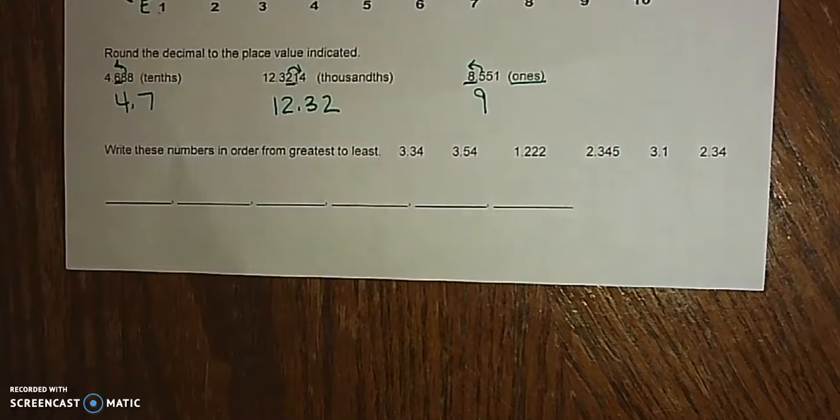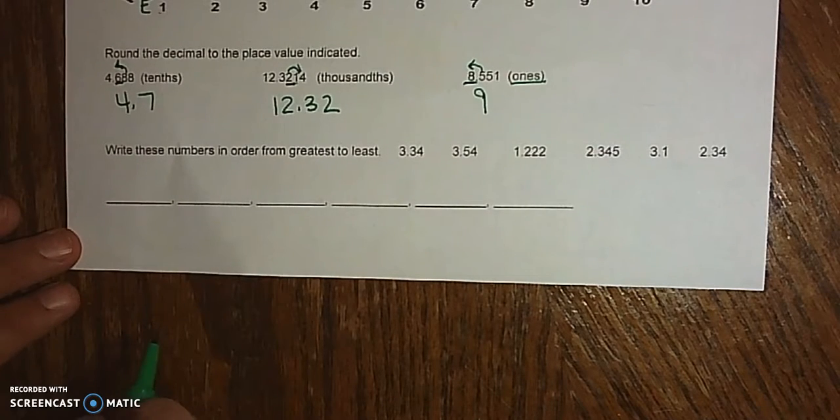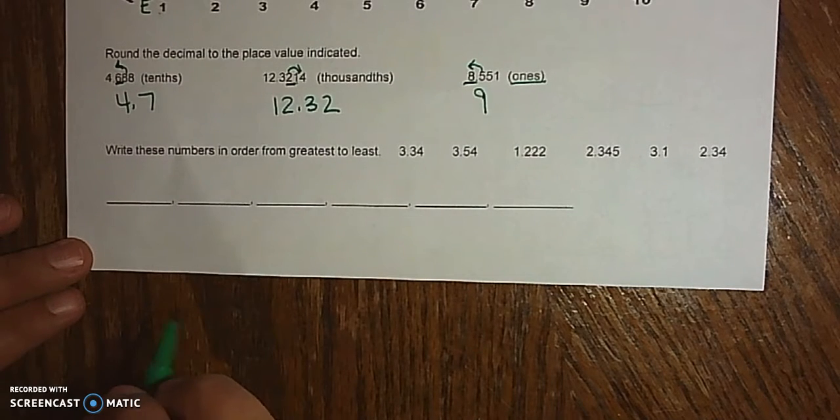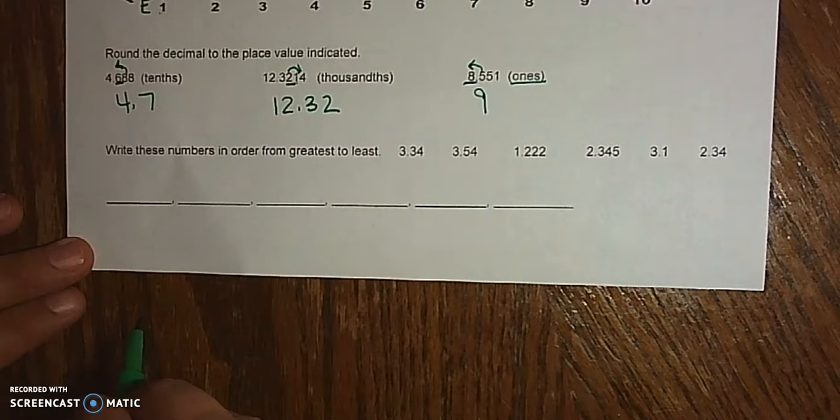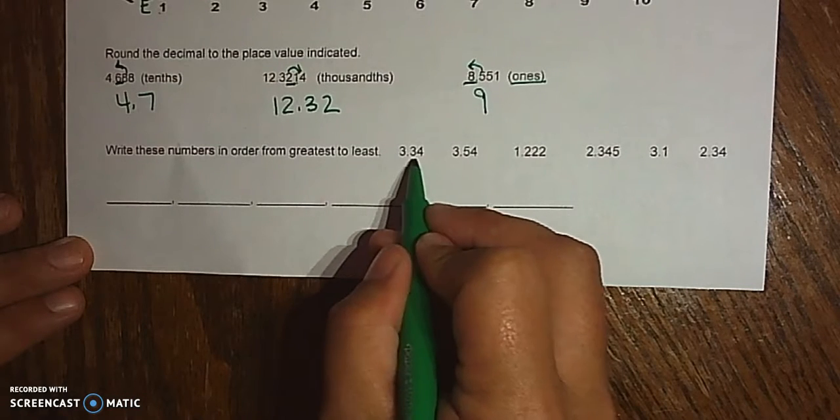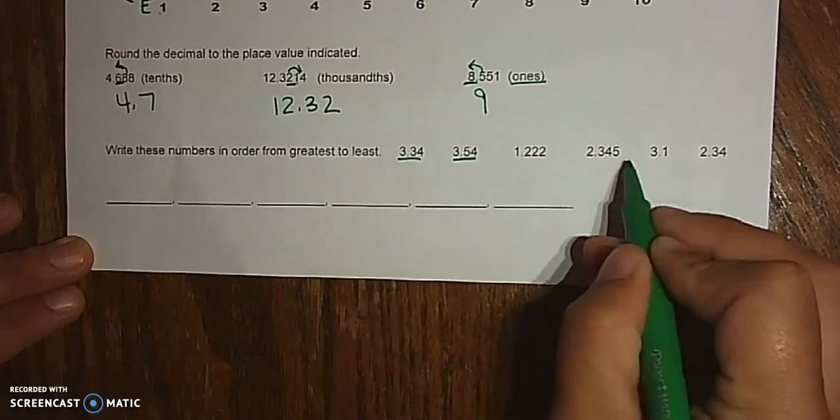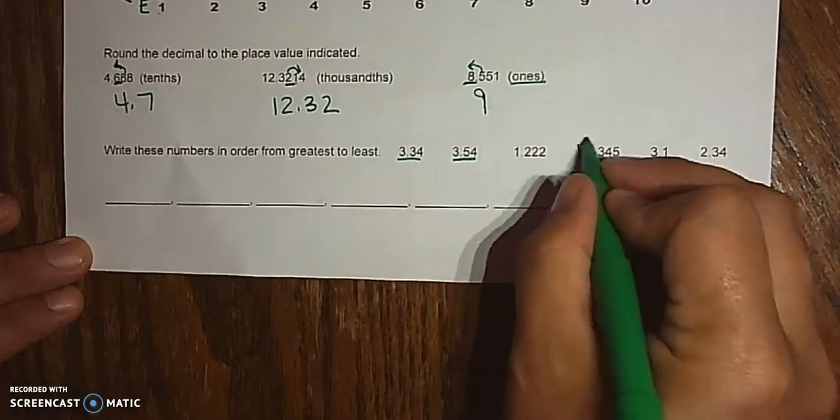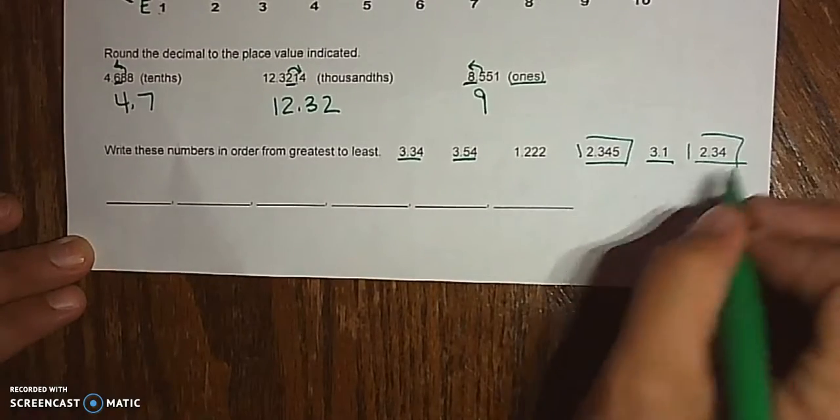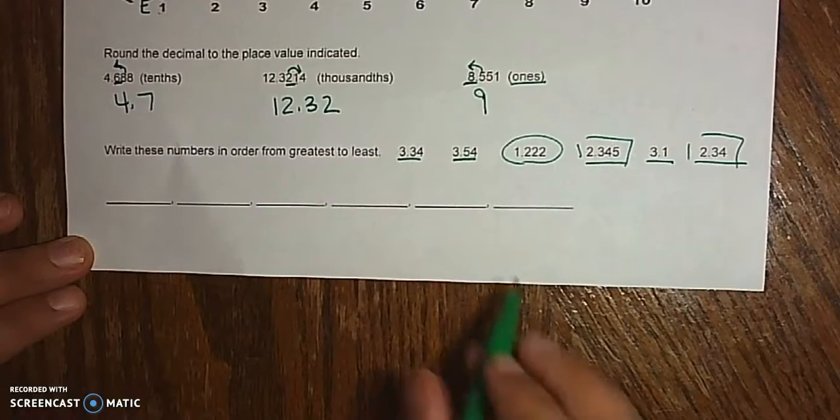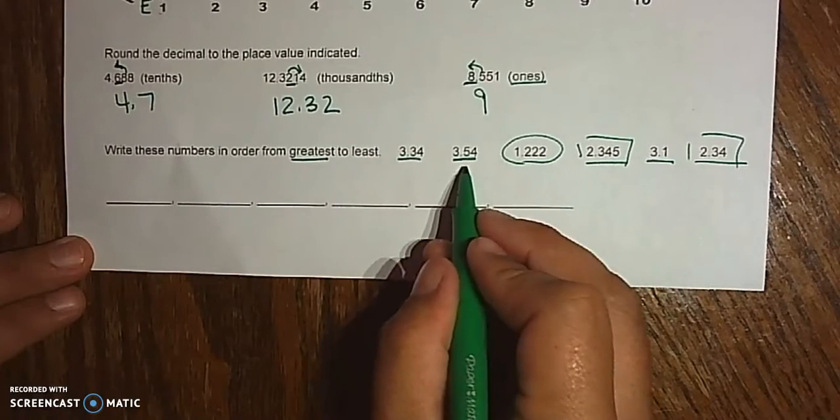Write these numbers in order from greatest to least. Make sure you pause here, try this on your own first, and then come back. Well, greatest, we look at the ones spots first. So, there's 3s, 2s, and 1s. So, we're going to do greatest, we're going to start with our 3s.